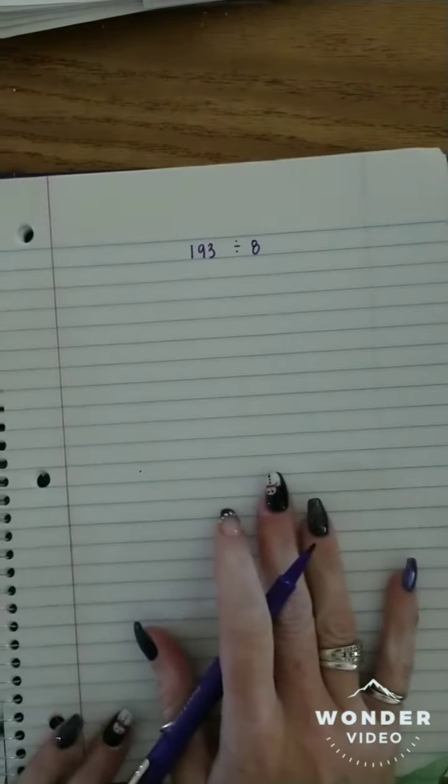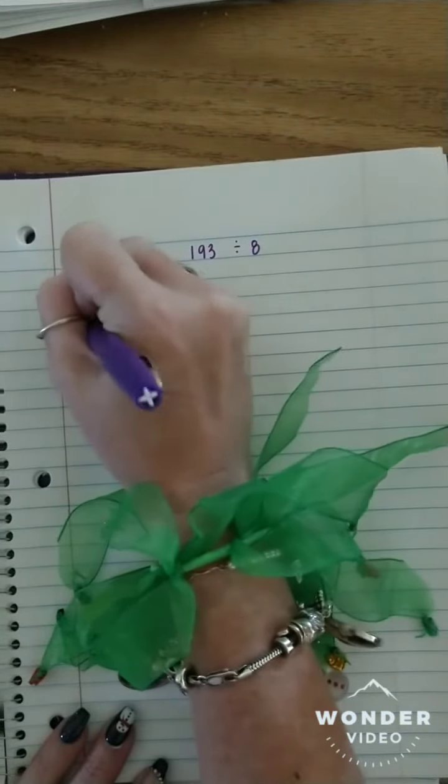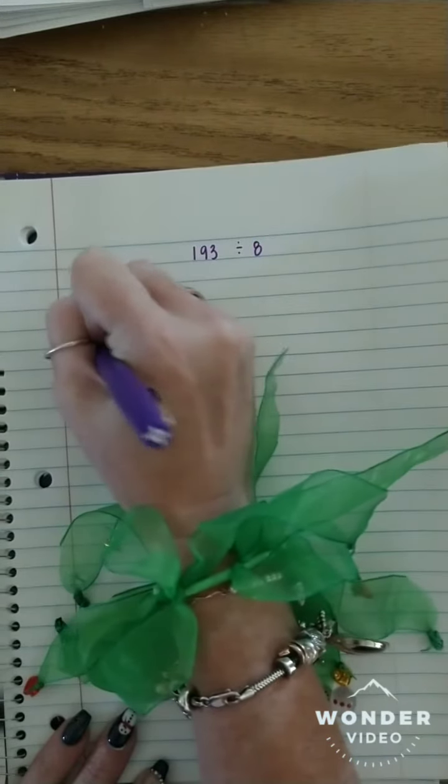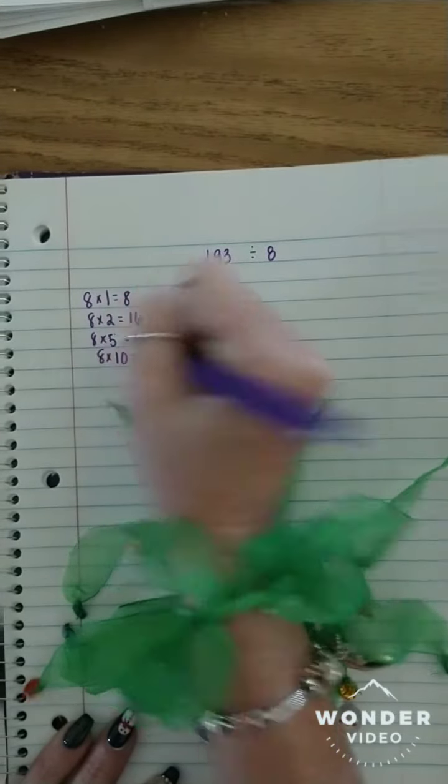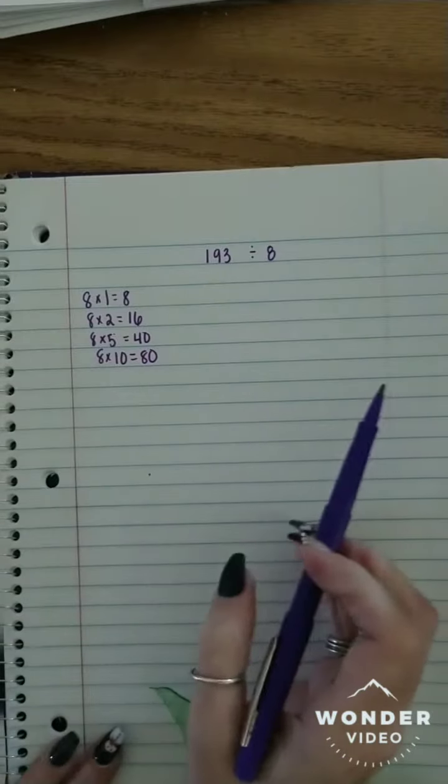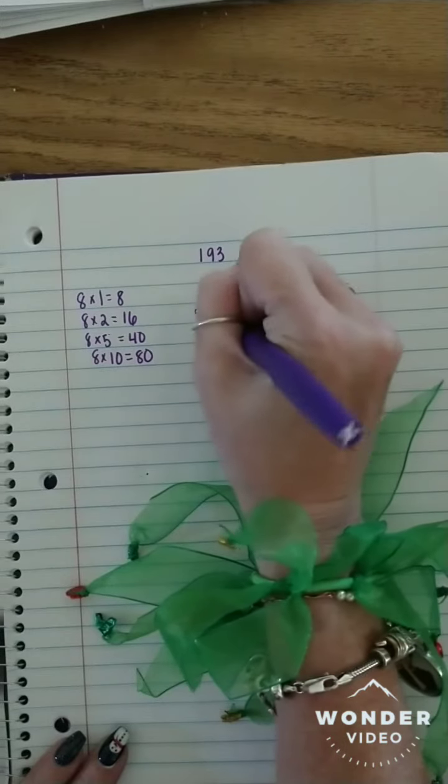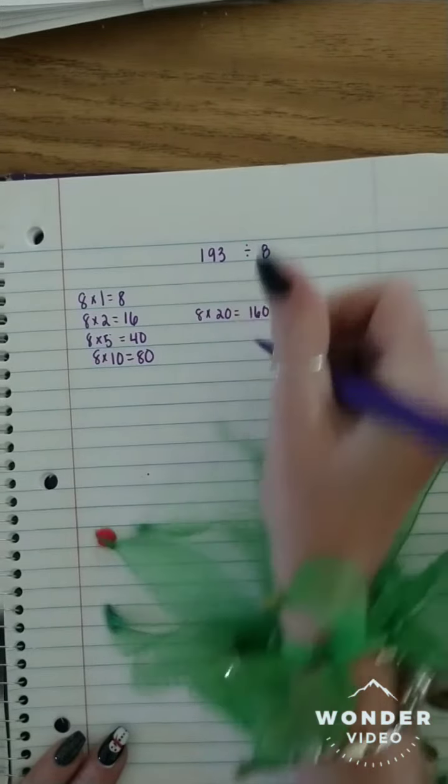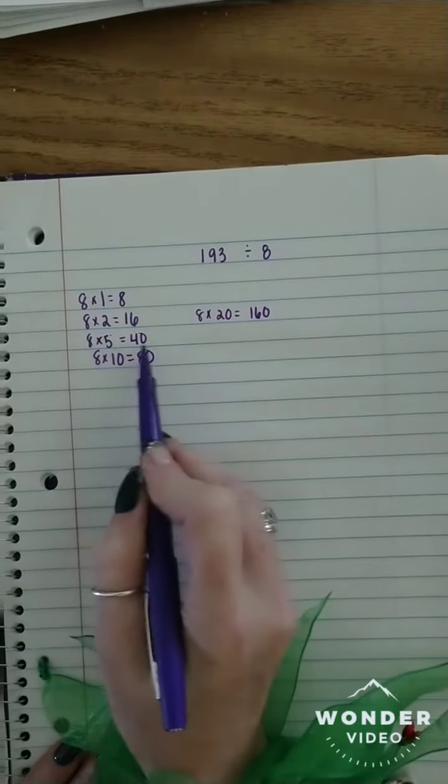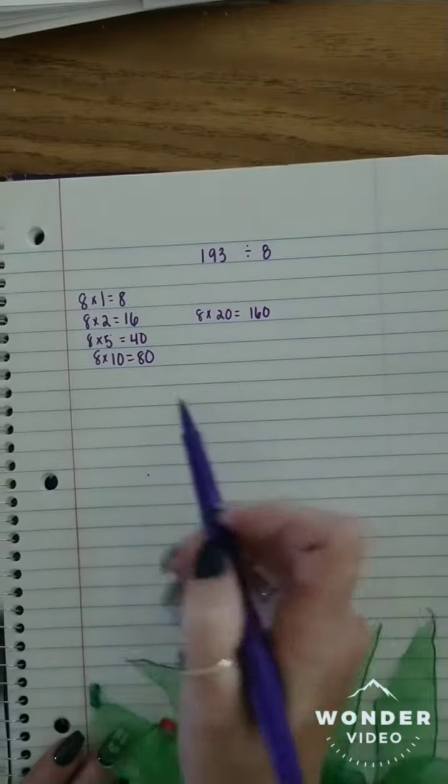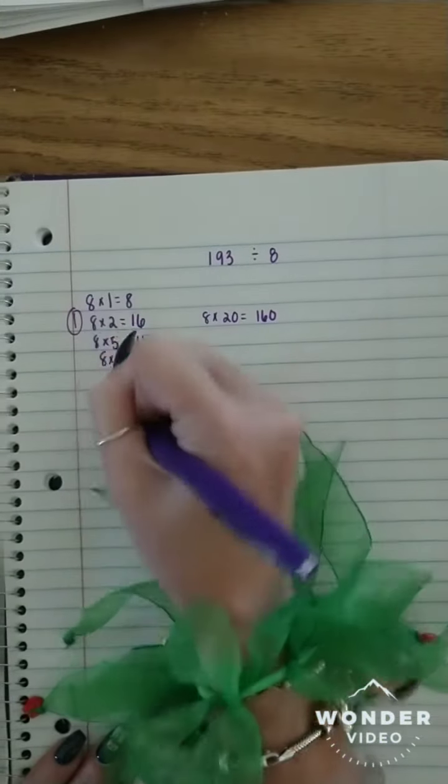Alright, so with this particular problem, I have to do my eights table. So I'm thinking friendly facts for eights: 8 times 1 is 8, 8 times 2 is 16, 8 times 5 is 40, 8 times 10 is 80. Alright, so I can think, what are my multiples of this? So 8 times 20 is 160. That is 8 times 2, which is 16, and then add a place value 0. And then I know 8 times 50 would be 400. So that's well over, and 8 times 100 would be 800. So these are my friendly facts that I want to use. So that's step one.